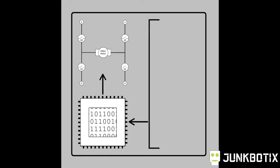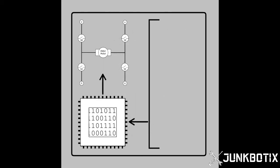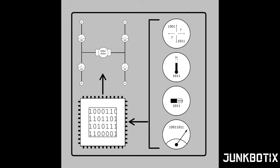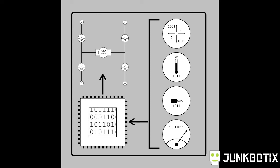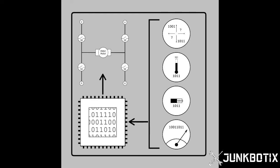A motor controller itself can be fairly basic, interpreting a signal to only control the direction and speed of the motor. Or it can be more complex, depending on what functions need to be controlled, along with what kind of signals need to be interpreted, as well as whether any feedback is needed to be processed and acted upon. Most of the time, a motor controller implements some form of an embedded system for its functionality, as software control is simpler to implement and maintain, and can be easily expanded upon as new features are needed.